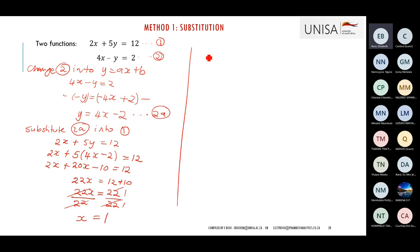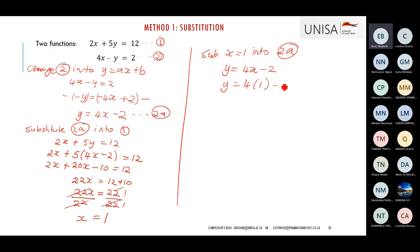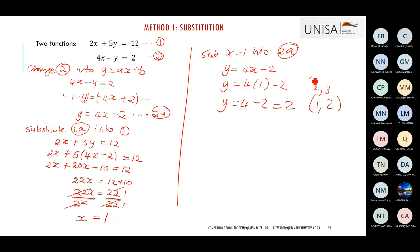Now substitute x = 1 into equation 2a: y = 4(1) − 2 = 4 − 2 = 2. So the coordinates are x = 1 and y = 2. That is the intersection point of the two lines, which we can plot on the Cartesian plane.